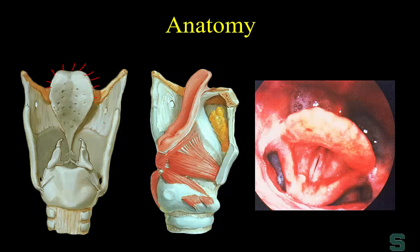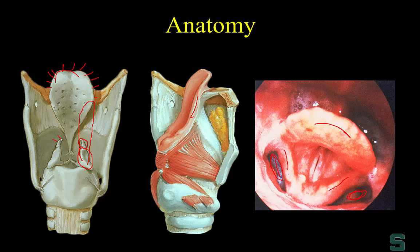That's the epiglottis — an anterior and midline structure. This is the arytenoid cartilage, and this is the corniculate cartilage — we try to ignore that one. The fold of tissue running from the arytenoid cartilage to the epiglottis is the aryepiglottic fold — named from those two structures. The epiglottis is anterior and midline; the aryepiglottic fold is a pyramidal structure. And that sac-like structure here? The piriform sinus.